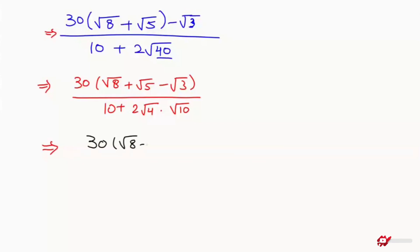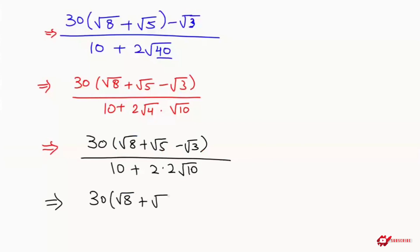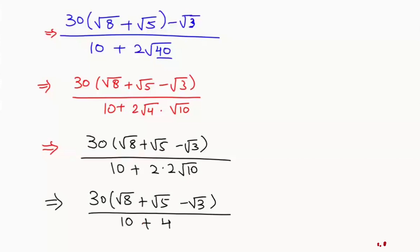I write 30 times (root 8 plus root 5 minus root 3) over 10 plus 2 root of 4 times root 10. Since root of 4 equals 2, this becomes 30 times (root 8 plus root 5 minus root 3) over 10 plus 4 root of 10.